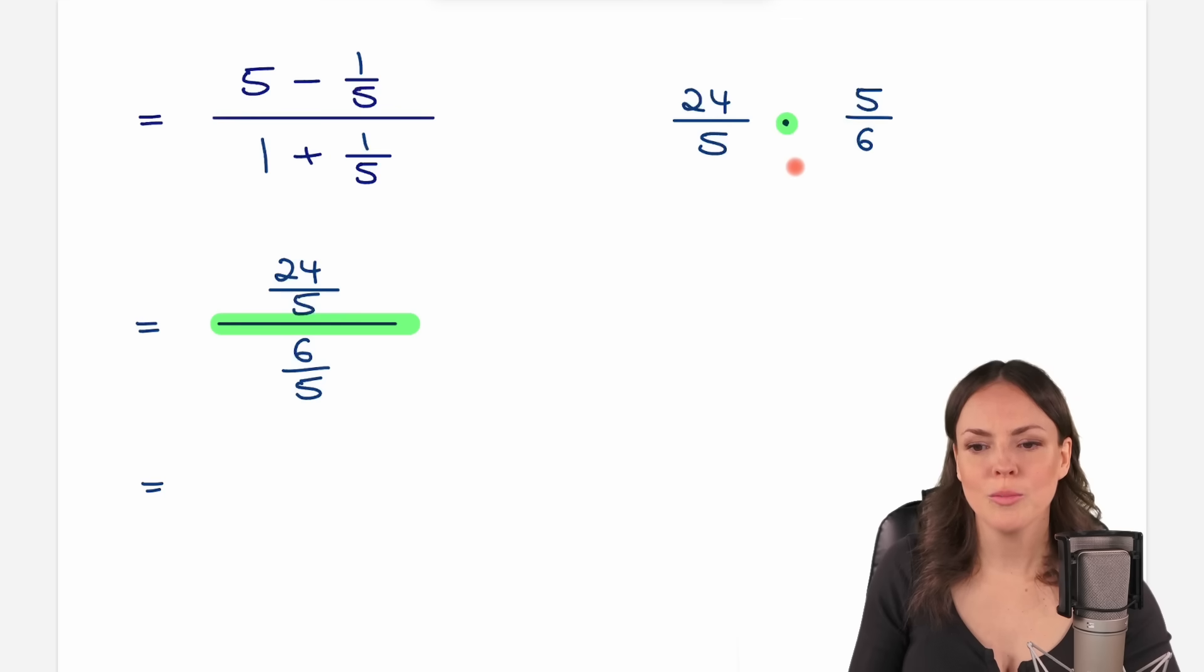Now, if we want to multiply, before multiplying, let's check if we can cancel things out, because we have the 5 down here, the 5 up here. Yes, that's great, it cancels out, which gives us 1, because 5 over 5 equals 1. And the 24 and the 6, they are both divisible by 6. 6 over 6 equals 1. 24 over 6 equals 4.